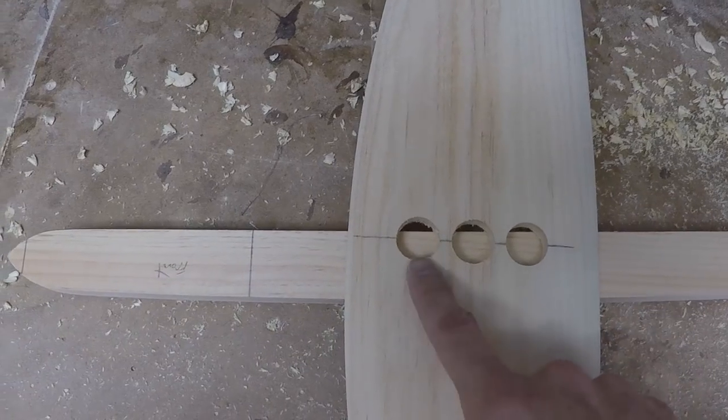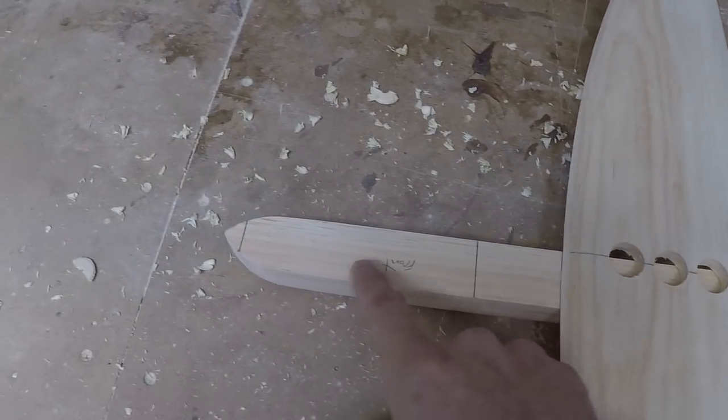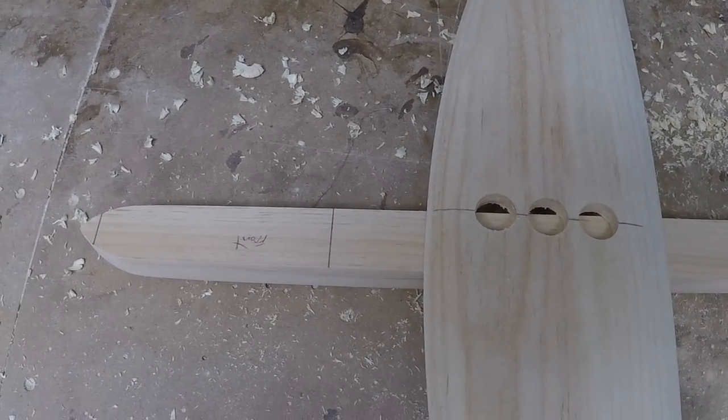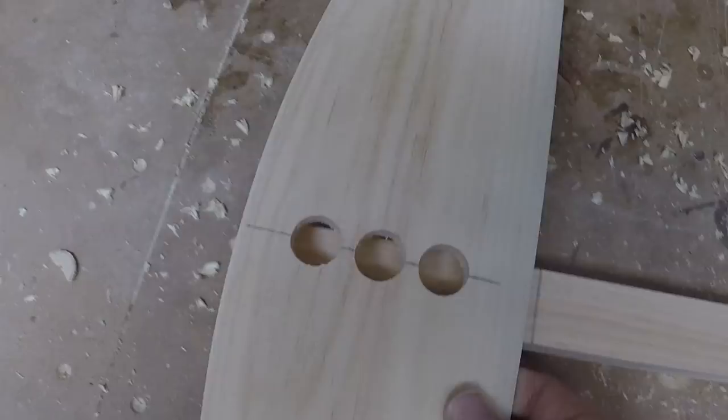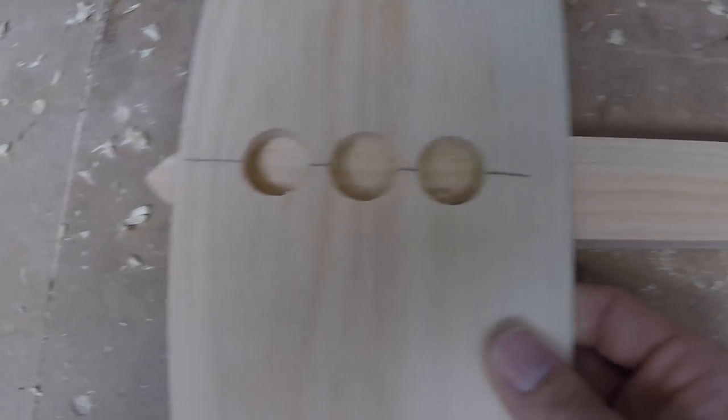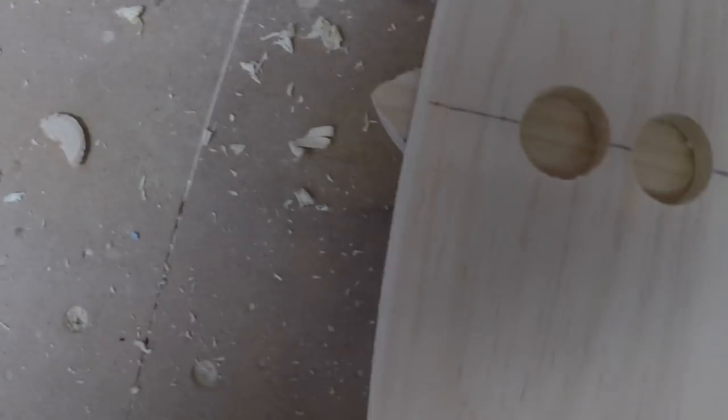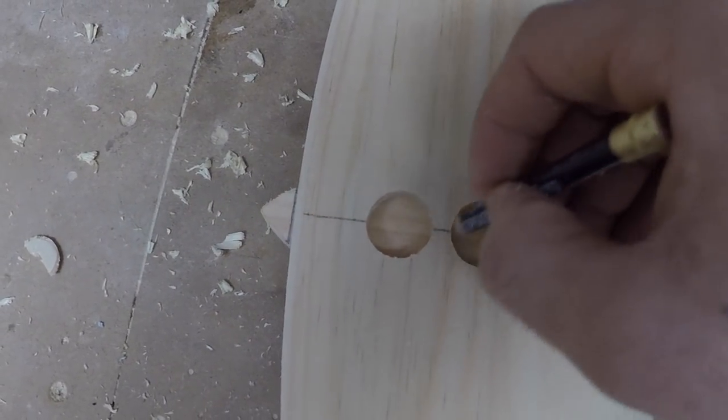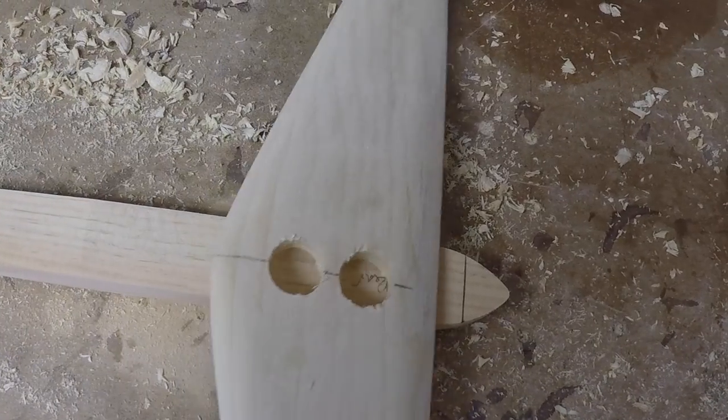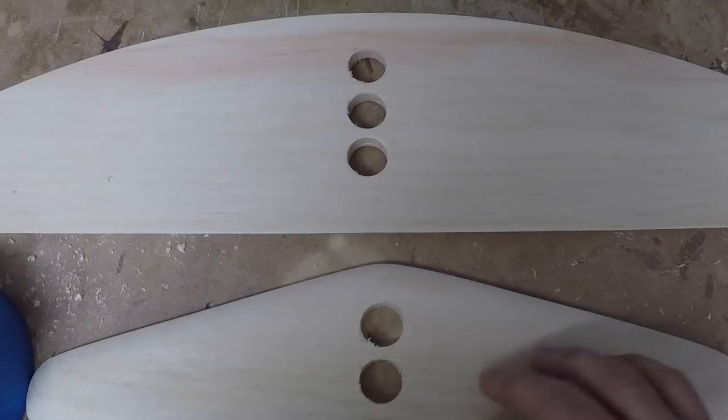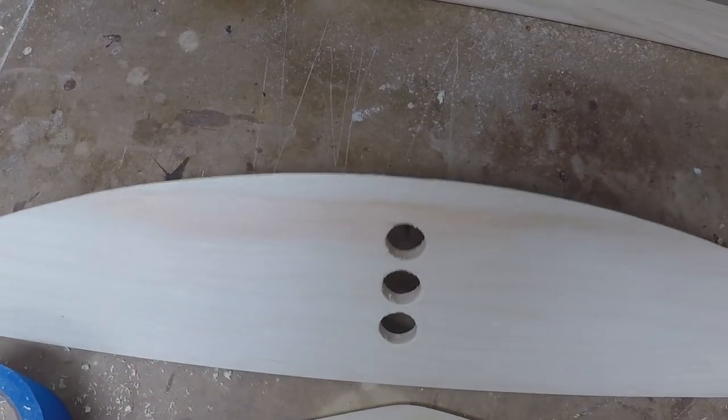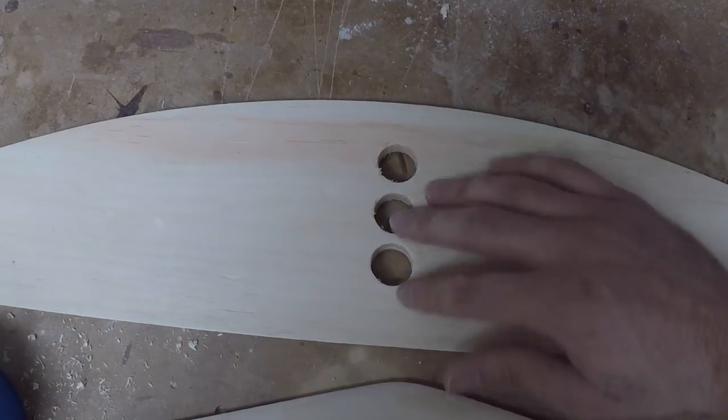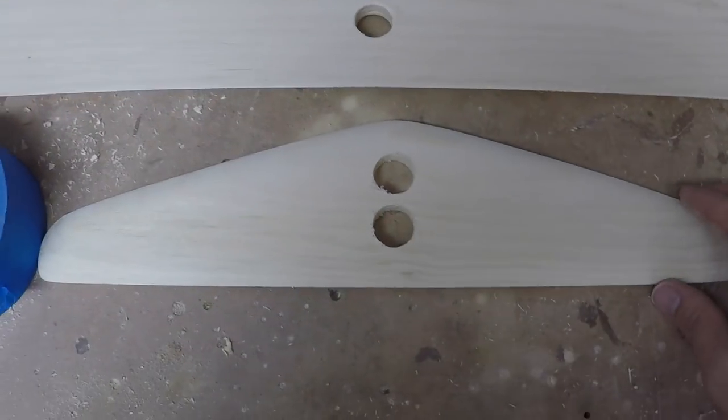So it's important to make sure that these holes are going to line up with where you're going to put the inserts on the fuselage. One helpful tip is just line the wing up right where it's supposed to be, and now you have a general sense of where these inserts are going to go. The same is done with the rear. Now that the holes are drilled, it's important to be careful because you're obviously missing a lot of wood there, so you don't want these wings to break.